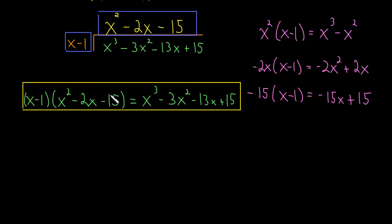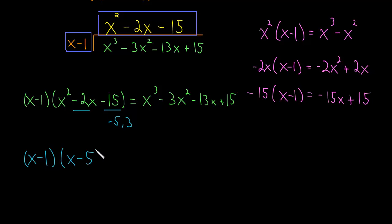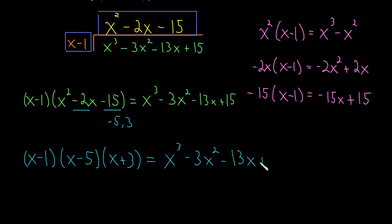The last step is to factor the quadratic term x squared minus 2x minus 15. We look for two numbers that multiply to negative 15 and add up to minus 2. That's going to be minus 5 and 3 — they multiply to negative 15 and add to minus 2. So our final factoring is x minus 1 times x minus 5 times x plus 3, equal to x cubed minus 3x squared minus 13x plus 15.